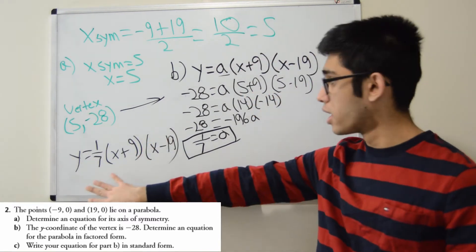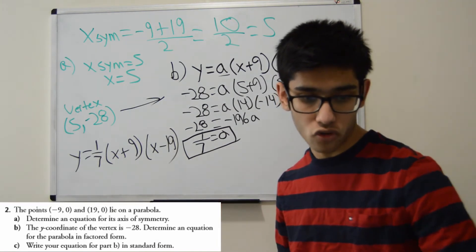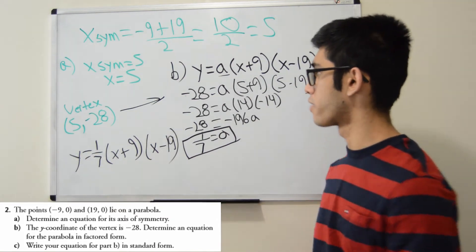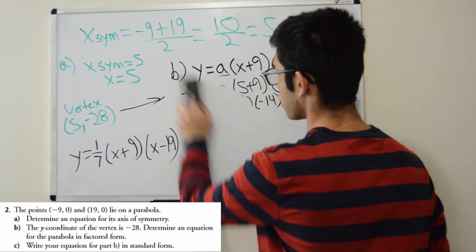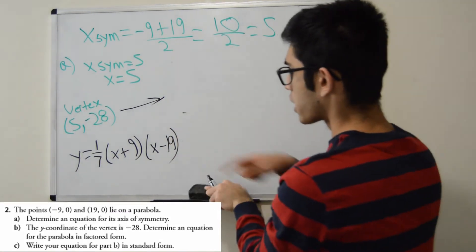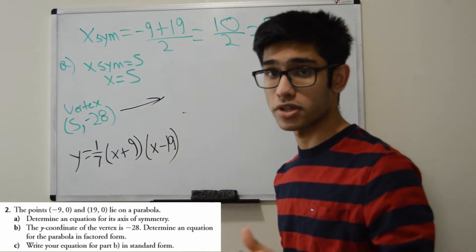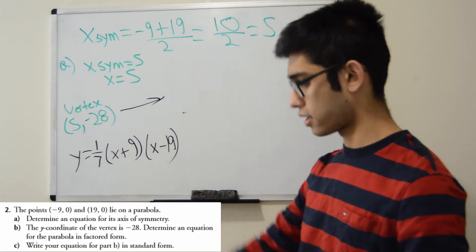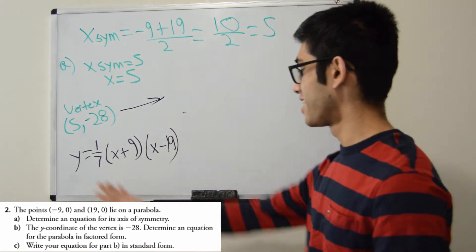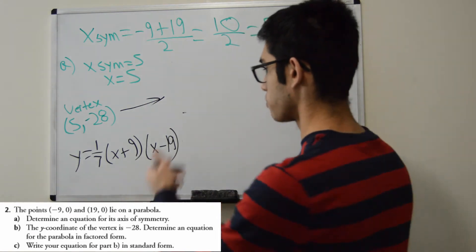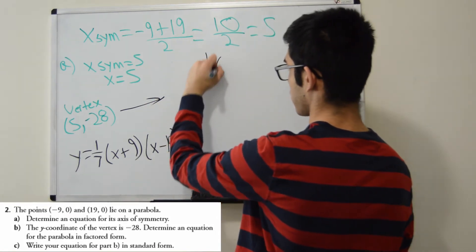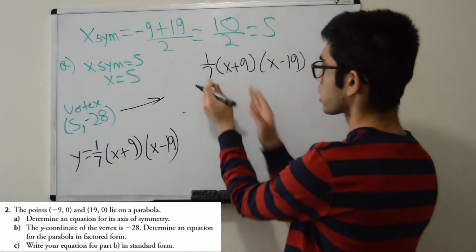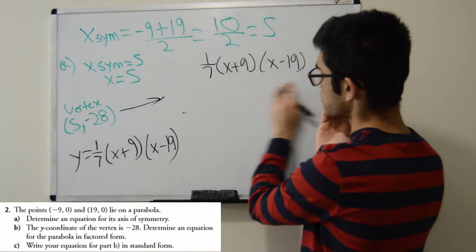And now the question, part C asks us to write the equation in standard form. Well standard form means we have to go ahead and expand this. So if you don't mind, I'm just going to erase this. Now we're going to expand this. Because how do we go from factored form to standard form? Go watch my expanding polynomials video if you forget. So I'm going to go ahead and expand. So we have 1/7 times (x + 9)(x - 19). First, we're going to ignore the 1/7 for now. We're going to deal with this first.